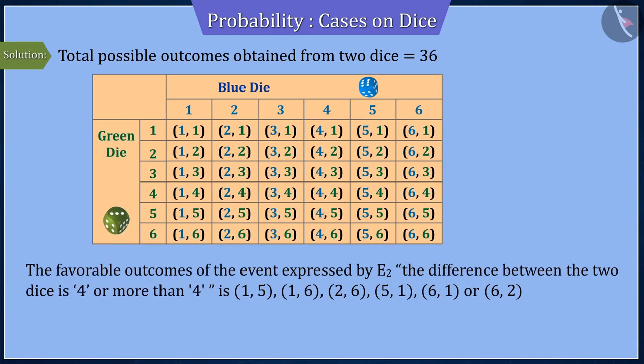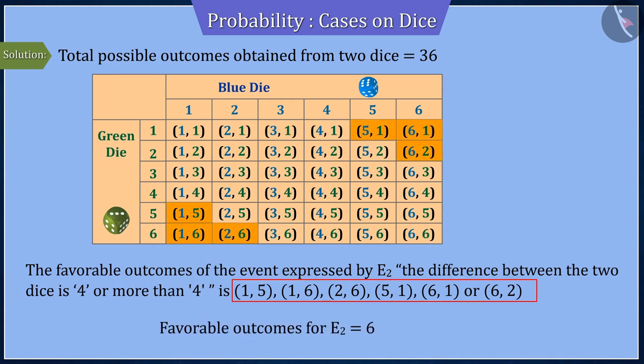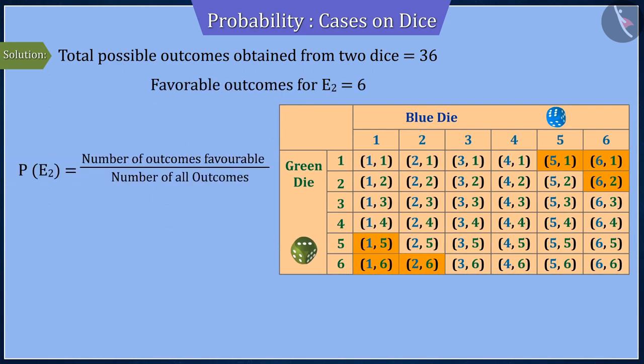Here, there are 6 total outcomes favourable to the event E2 where the difference between the two dice is at least 4 or more. By substituting the value of favourable to the event and the value of all possible outcomes in the probability formula, we get 1 by 6 or 0.167.